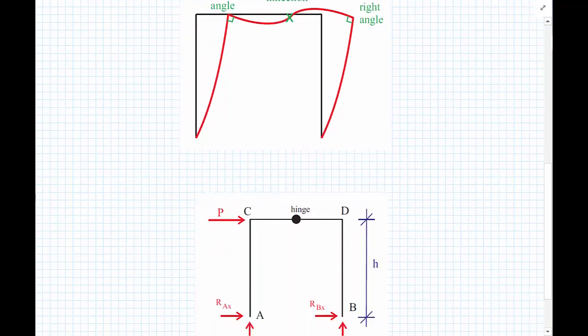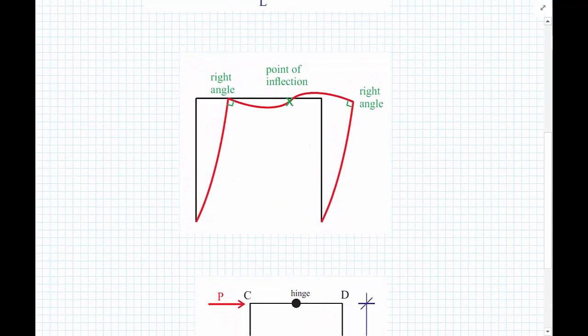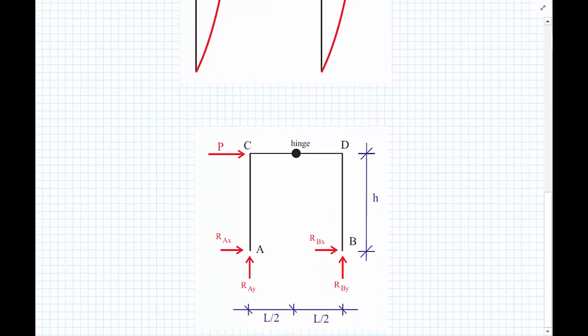So what we're going to do is assume that the point of inflection, so zero bending moment or effectively a hinge, occurs halfway between the tops of the columns, so halfway between C and D.